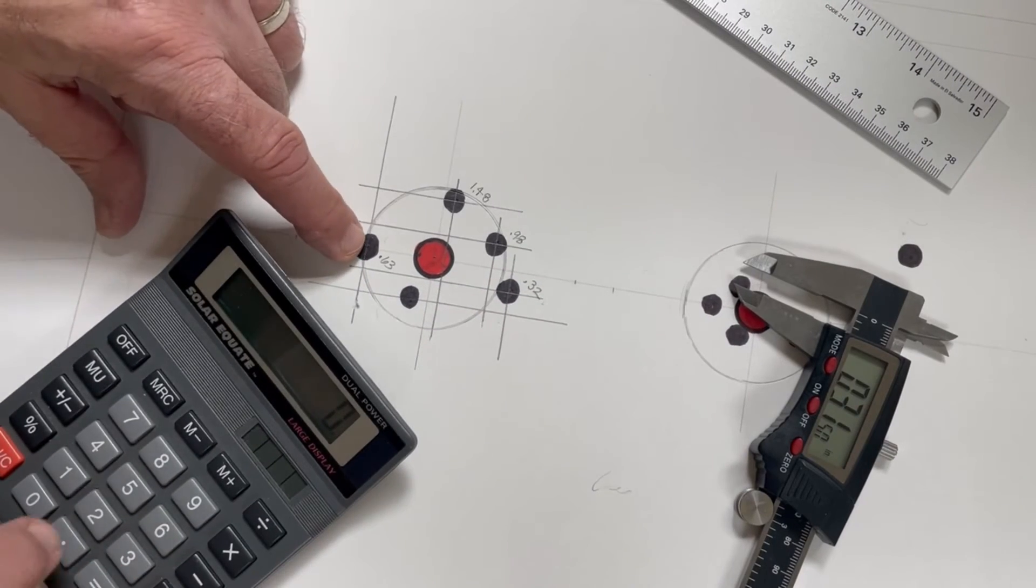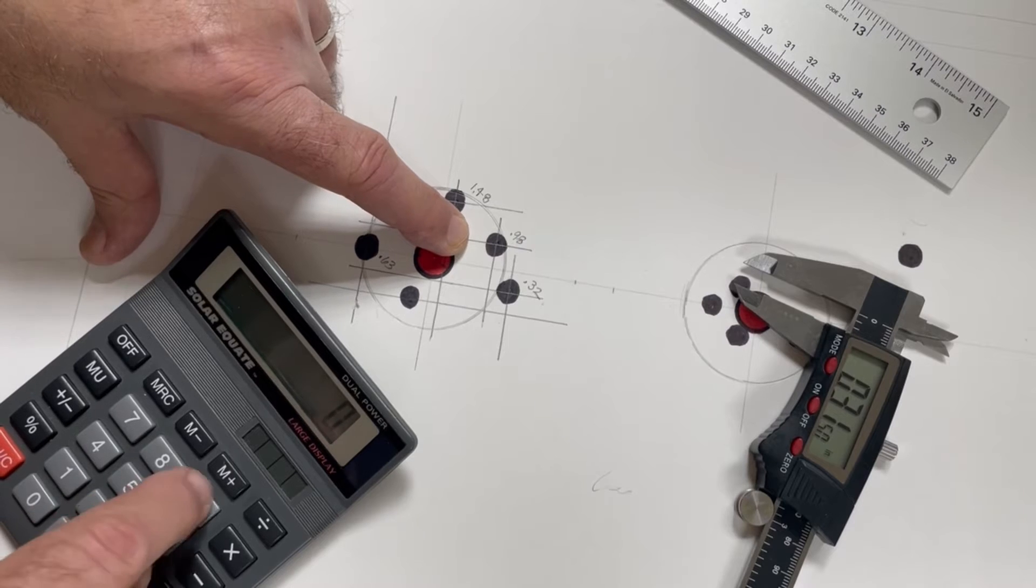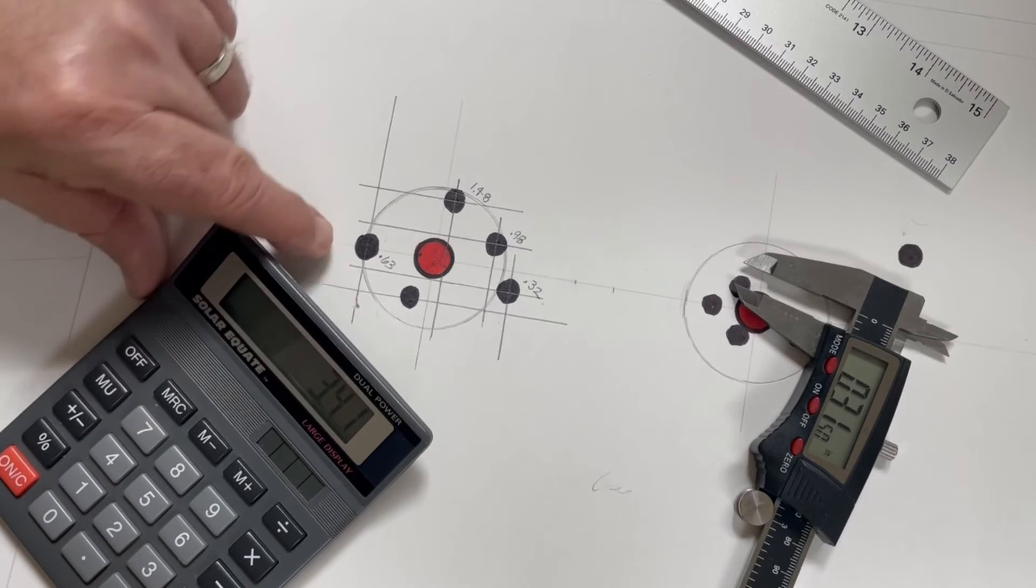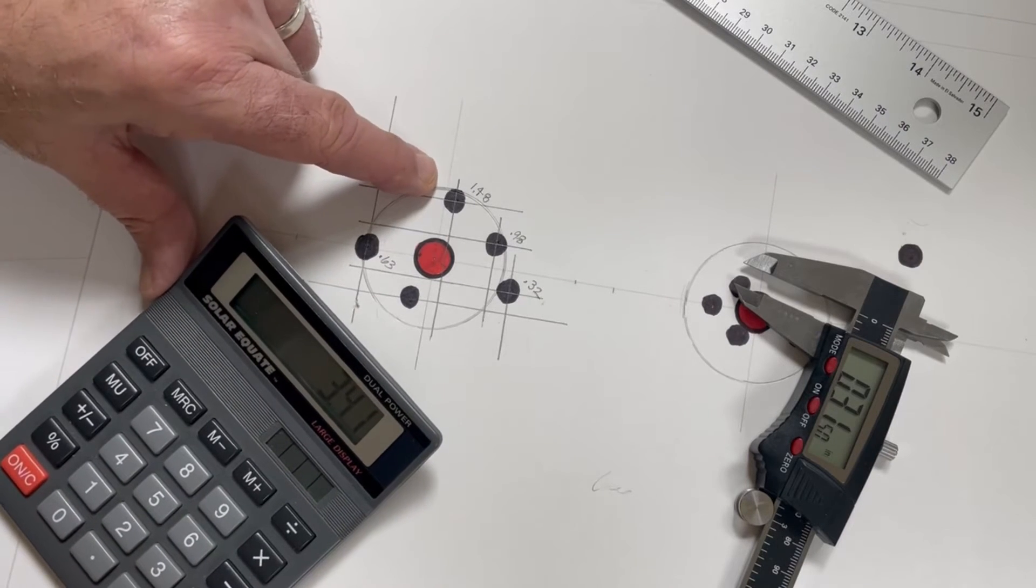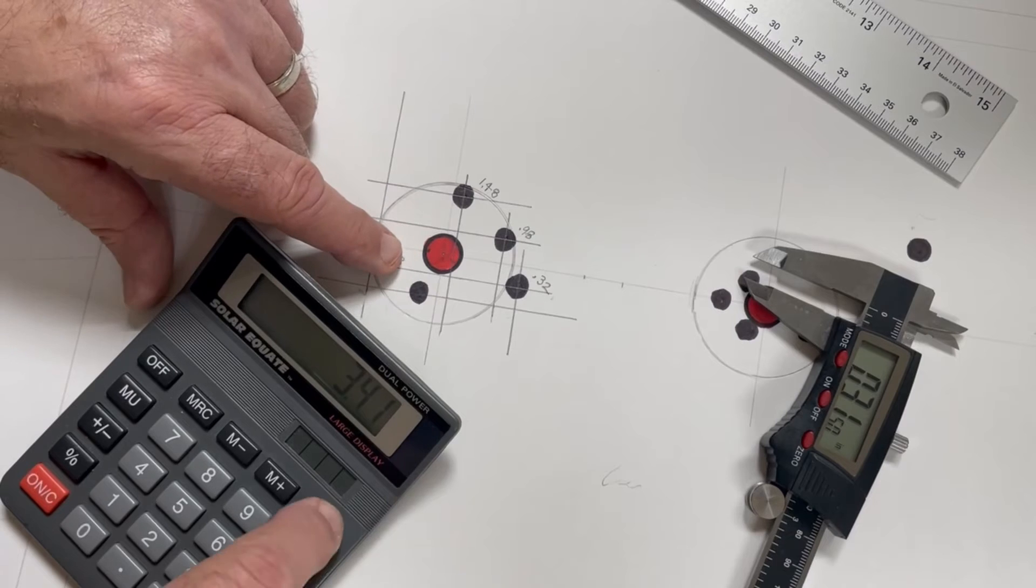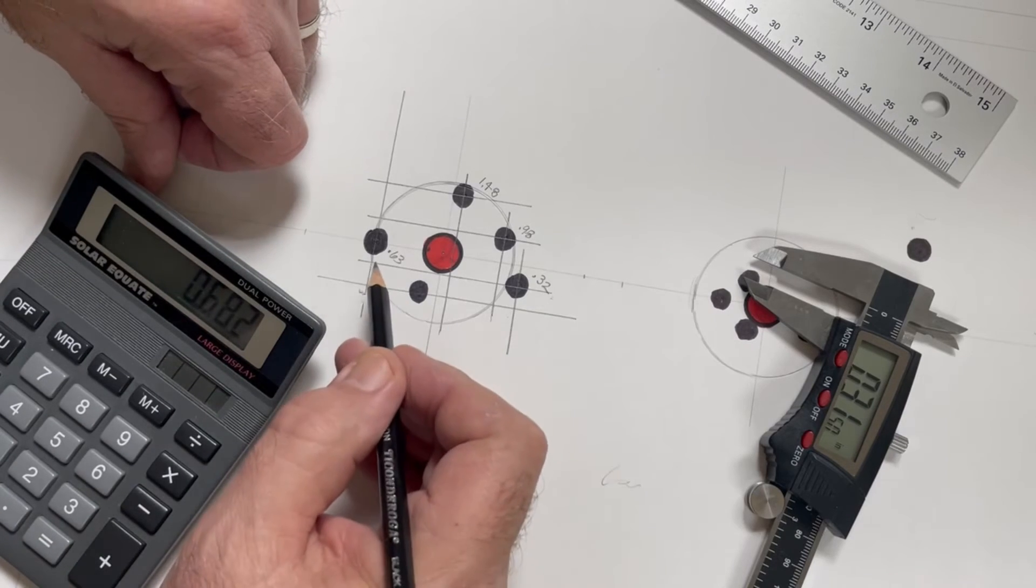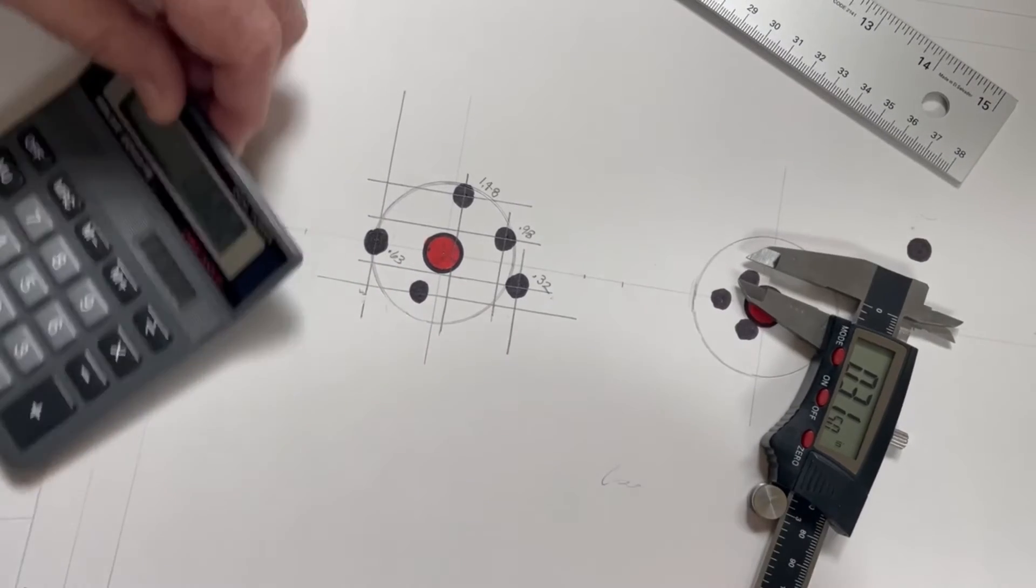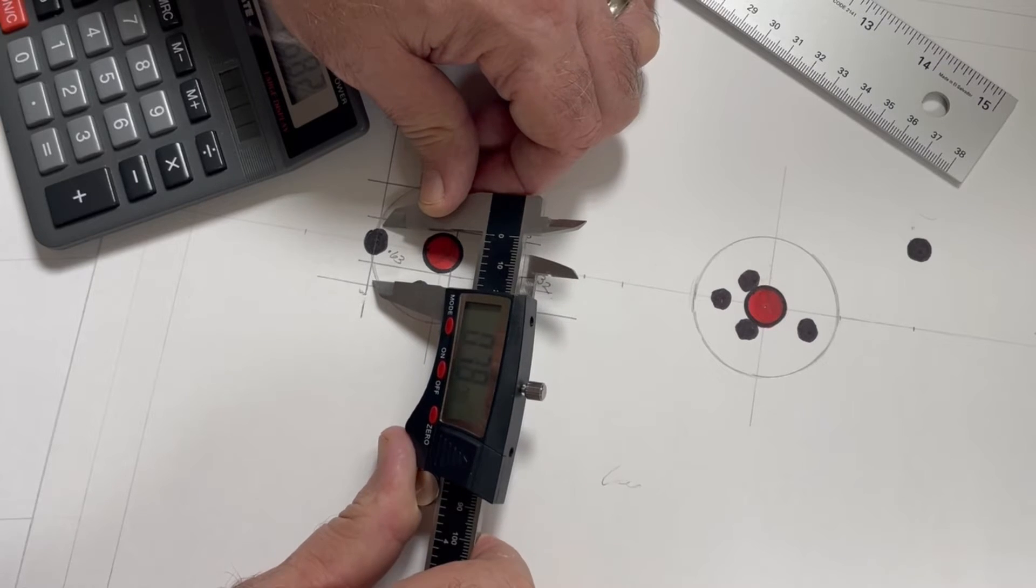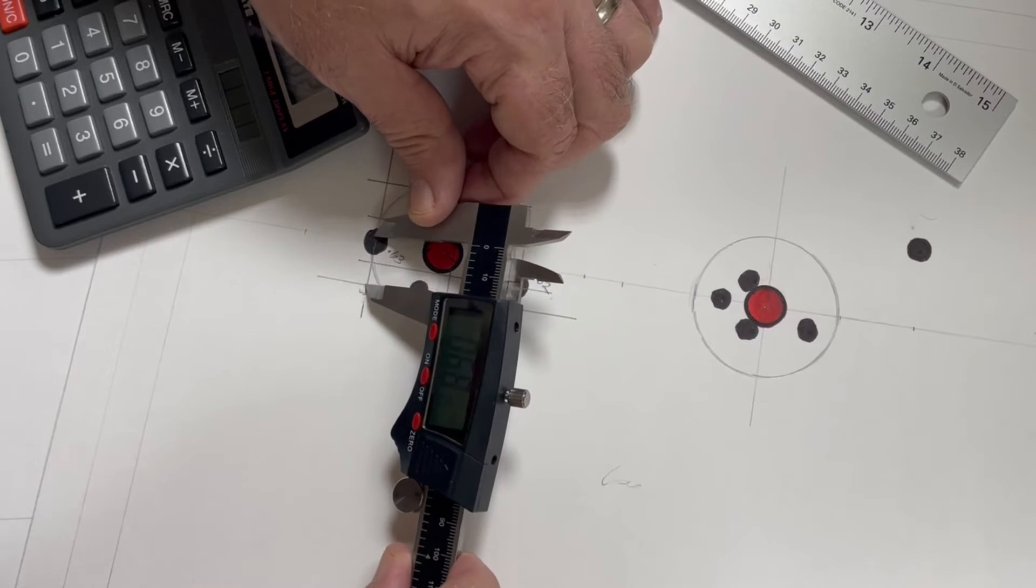Now, we're going to take all of these, 0.63 plus 1.48 plus 0.98 plus 0.32. That's 3.41. We're going to divide, oh, and this was zero. So, we're going to include this. So, we've got four measurements, and we're going to divide that by five because there's five impacts. That gives us an average horizontal of 0.682. Let's find that here from the bottom. Here we go. It's 0.6815. That's going to be close.